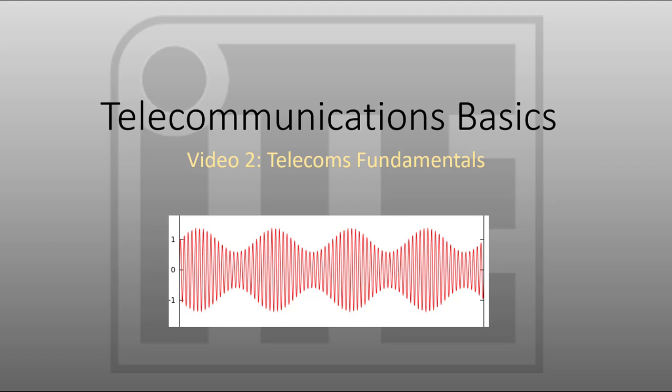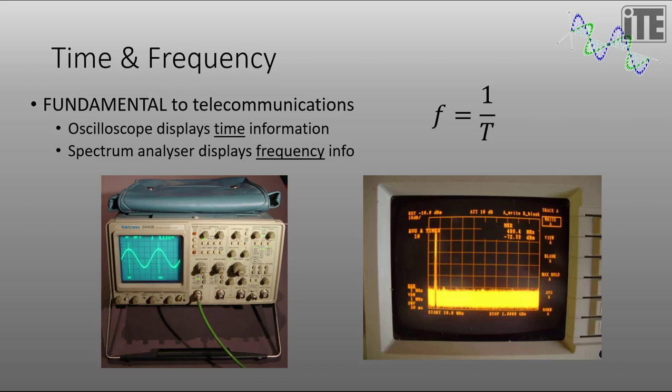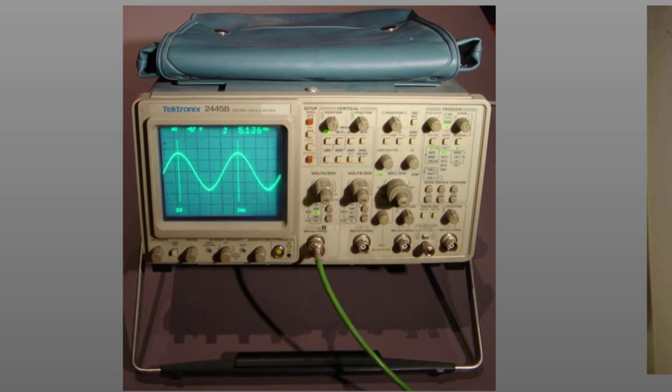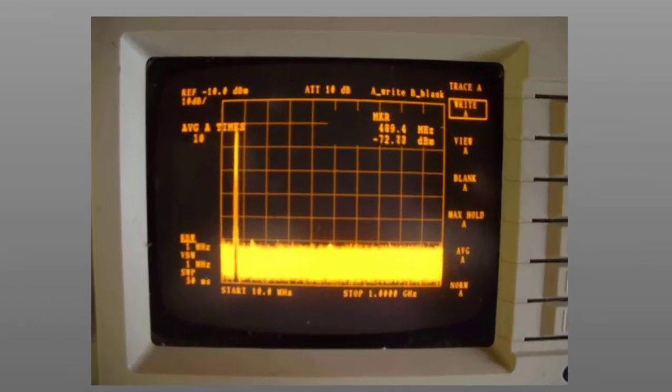In this video we're going to be looking at some telecommunications fundamentals. Fundamental to telecommunications is the notion of time and frequency. This instrument on the left here is an oscilloscope and the horizontal axis on the display is time. So it displays a waveform in what we call the time domain. The instrument on the right is displaying the same signal but in this case the horizontal axis is in terms of frequency.